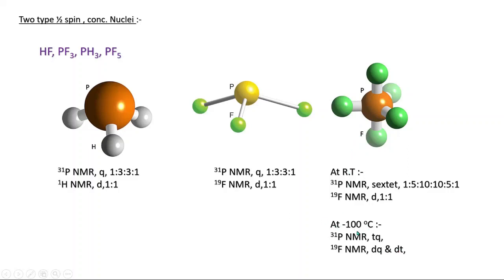If you decrease the temperature to minus 100 degrees centigrade, the fluxionality disappears and the molecule becomes rigid. Now the equatorial fluorines and axial fluorines are in different environments. Due to the two axial fluorines, we get a triplet, and due to the three equatorial fluorines, we get a quartet — so phosphorus shows a triplet of quartet.